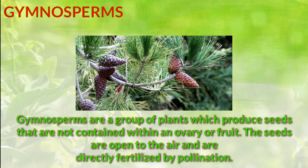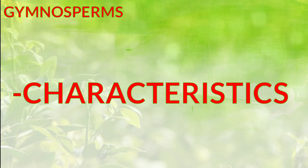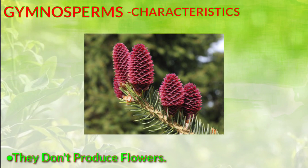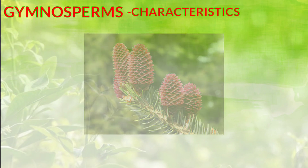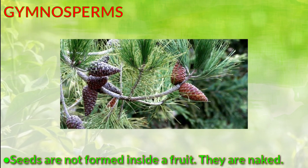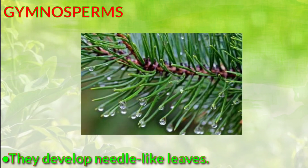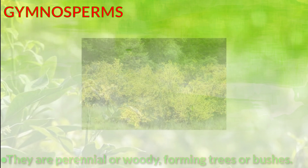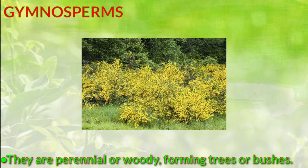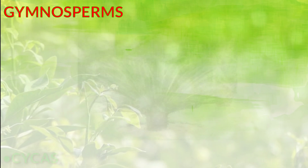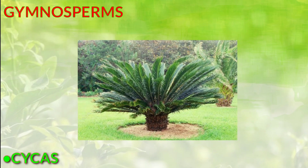The seeds are open to the air and are directly fertilized by pollination. Some characteristics of gymnosperm: they don't produce flowers, their seeds are naked, they are found in colder regions where snowfall occurs, they develop needle-like leaves, and they are woody, forming trees or bushes. An example of gymnosperm is Cycas.